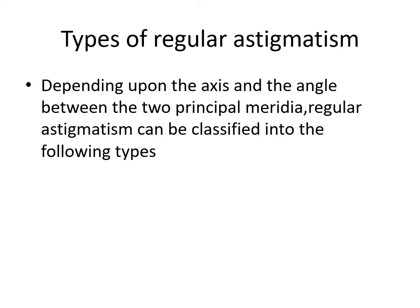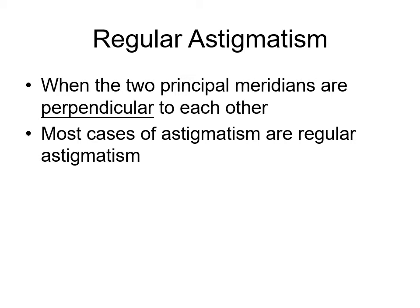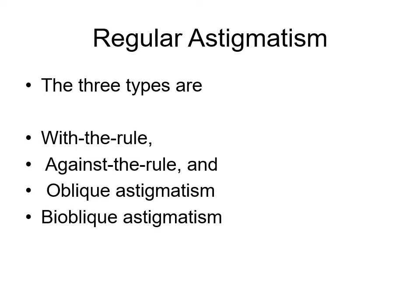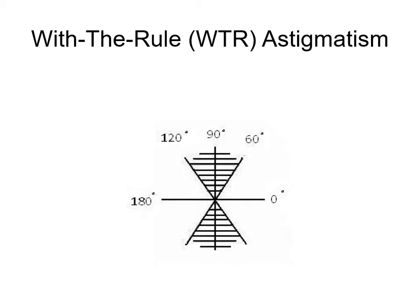The types of regular astigmatism depend upon the axis and the angle between the two principal meridians. When the two principal meridians are perpendicular to each other, it is called regular astigmatism, and most cases fall into this category. There are four types: with the rule (WTR), against the rule (ATR), oblique astigmatism, and bi-oblique astigmatism. On the diagram, 0°–180° is horizontal, 90° is vertical, and 60° and 120° are other meridians.